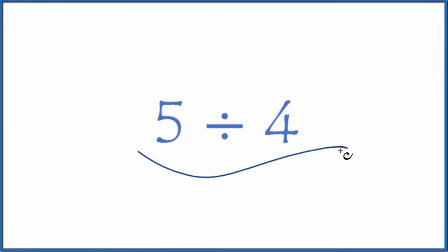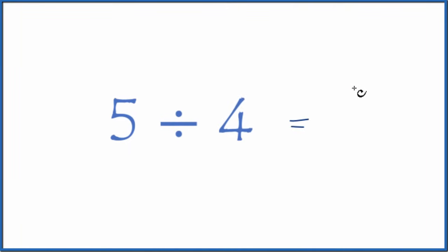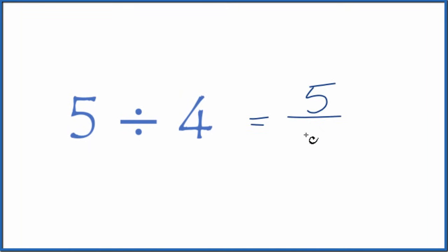Let's take a look at 5 divided by 4. You can think about it like this: 5 divided by 4 is the same as the fraction 5 over 4. And we can see that 4 is smaller than 5, so our answer should end up greater than 1.